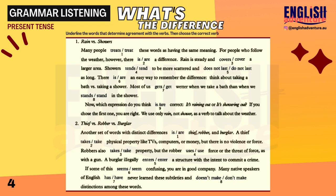A thief takes physical property, like TVs, computers, or money, but there is no violence or force. Robbers also take property, but the robber uses force, or the threat of force, as with a gun. A burglar illegally enters a structure with the intent to commit a crime.